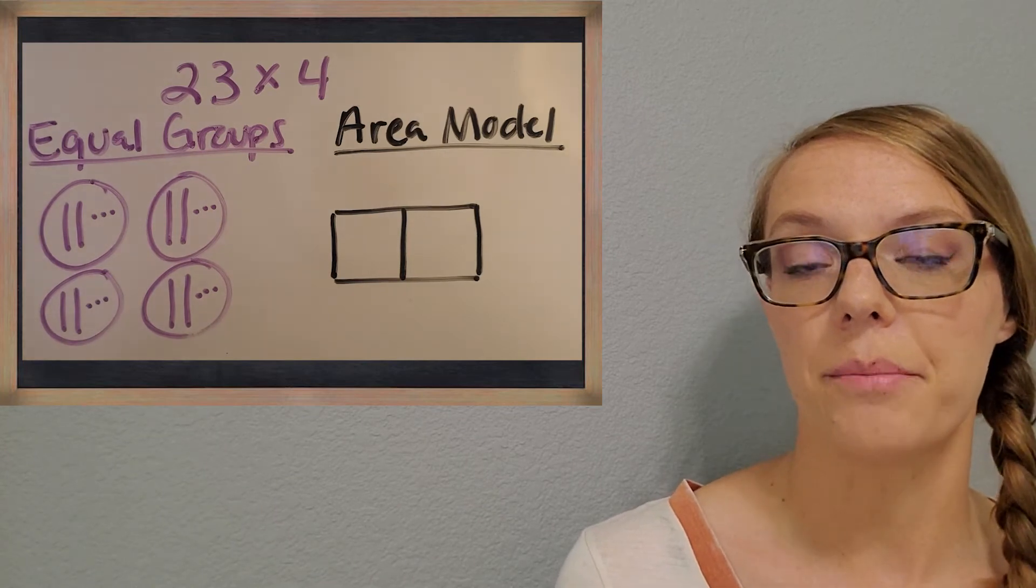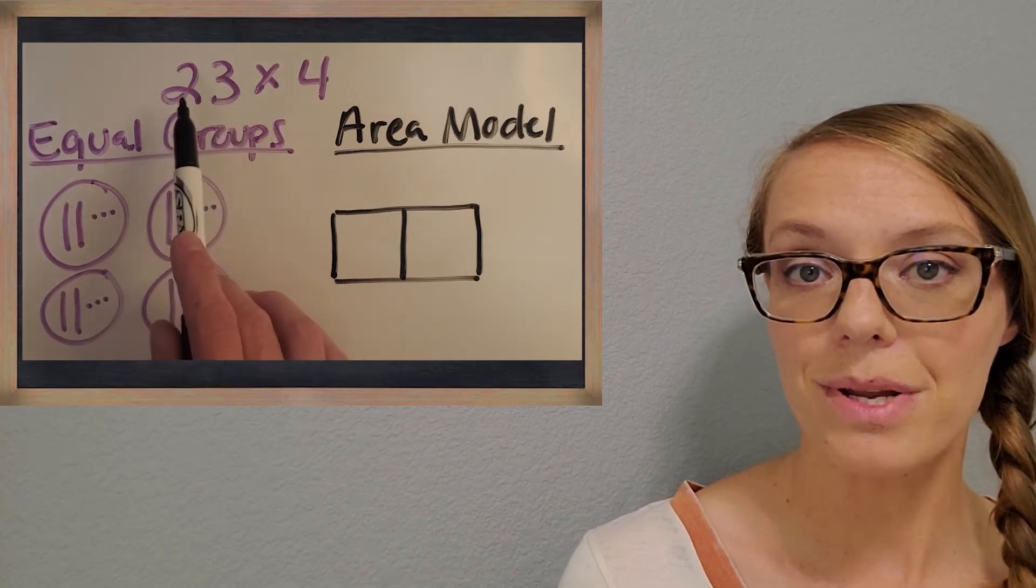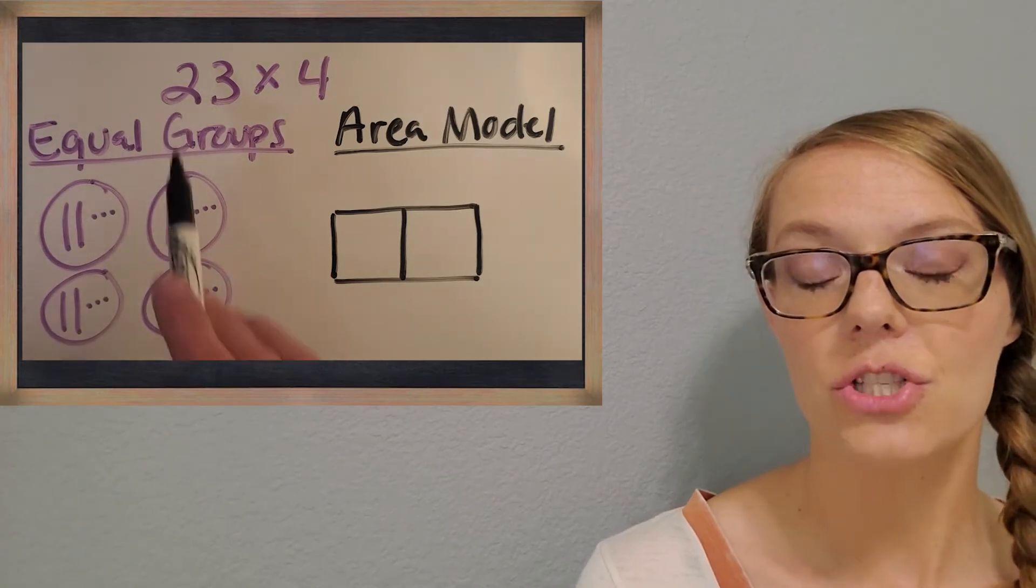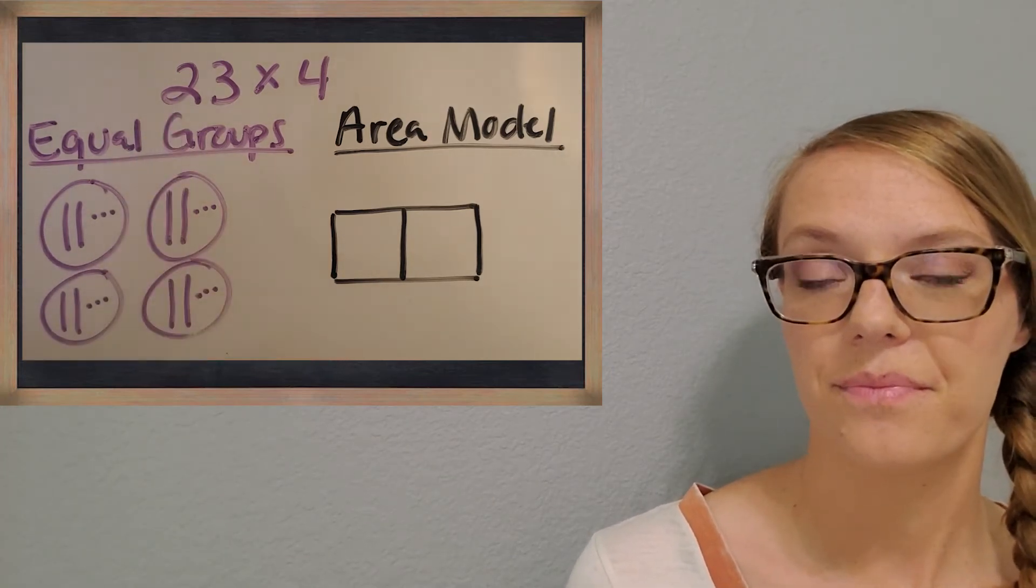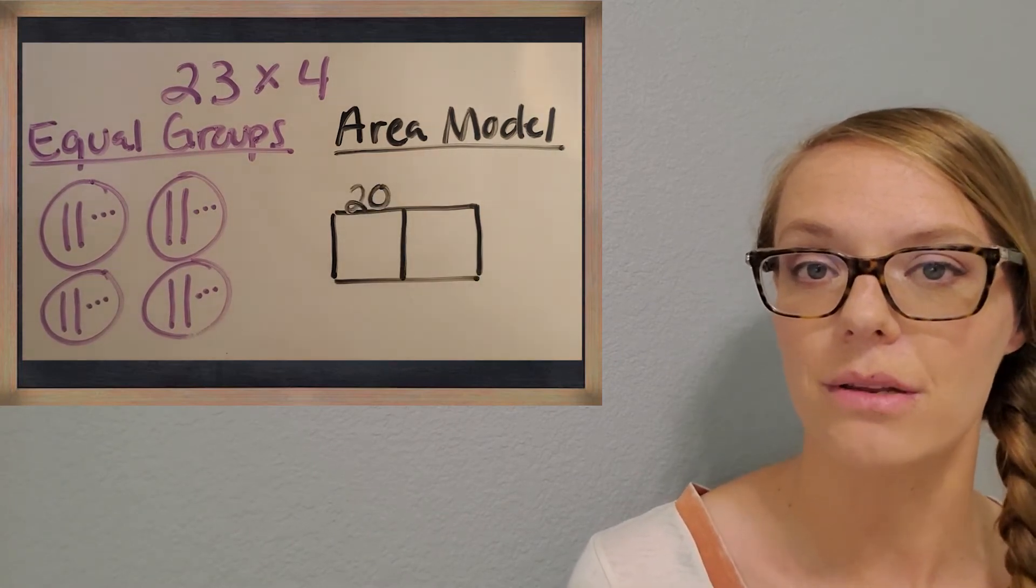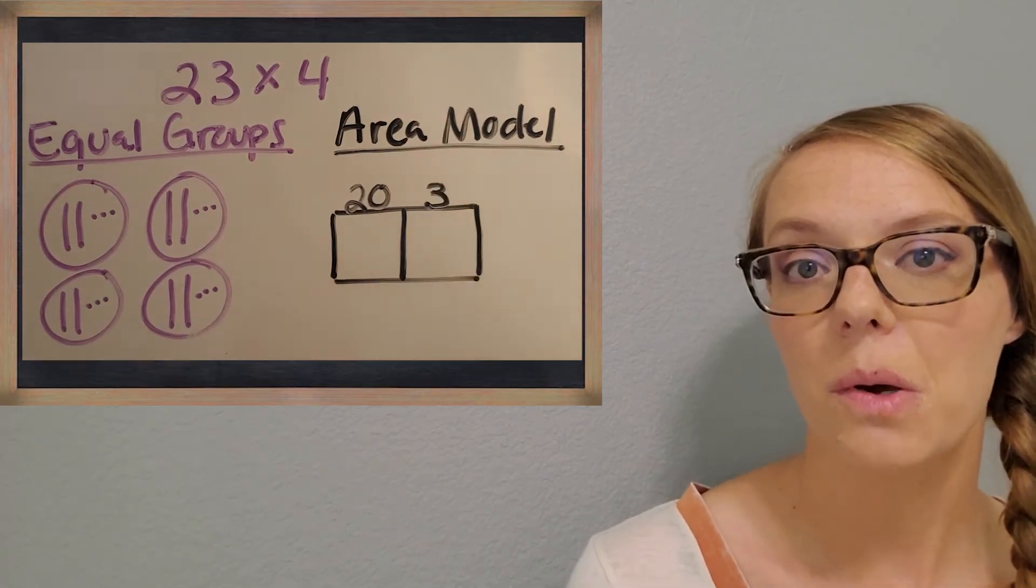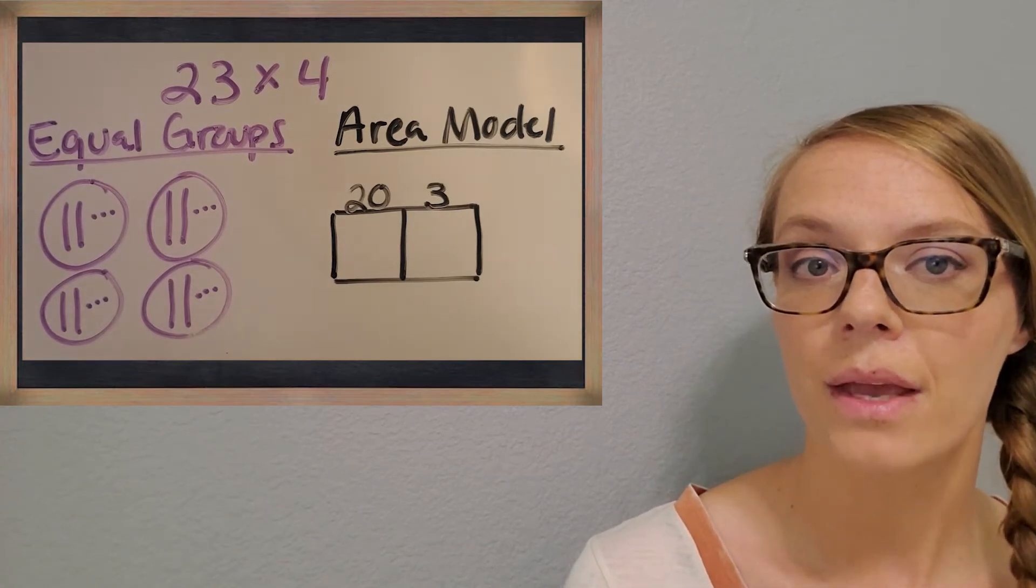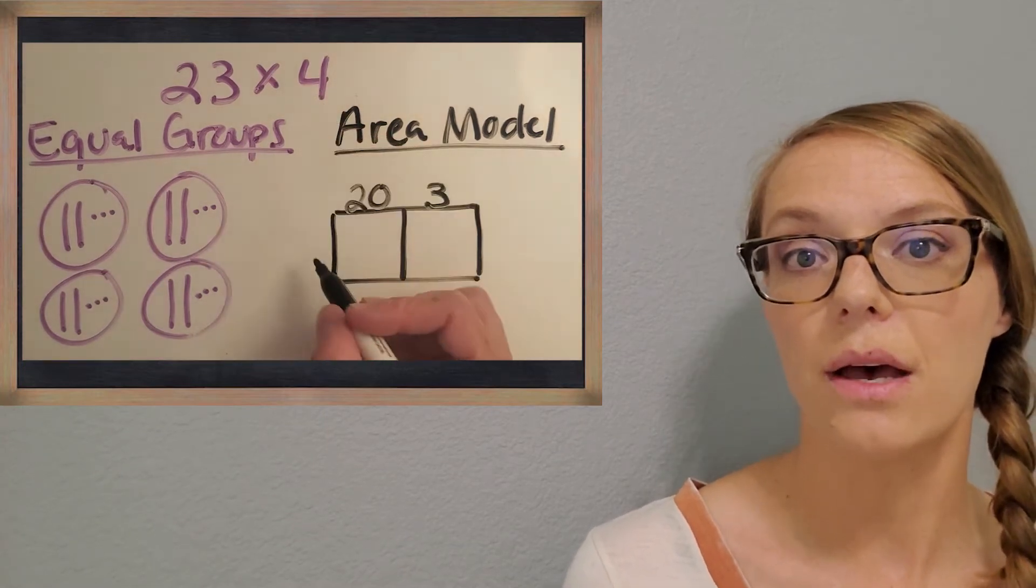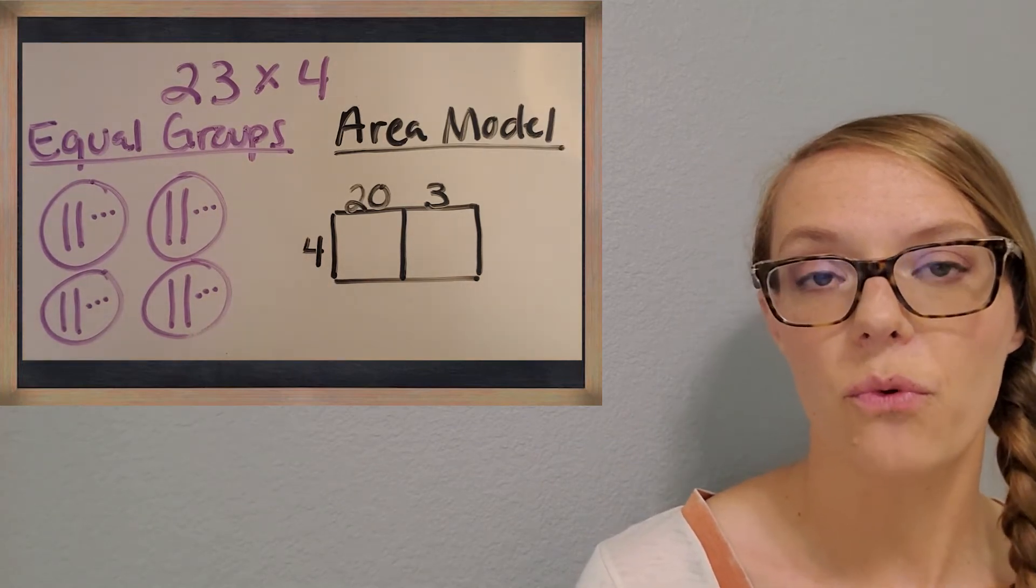Now as we're labeling this number, we can be saying, how can I split up my 23 by its place value? What is that two really worth? Great, it's worth 20. So we're going to put 20 in one section. And that three is just worth three because it's just in the ones place. So we'll put three on the other part. And we're multiplying both of those by four because that was the other part of my problem. So we'll put four there.